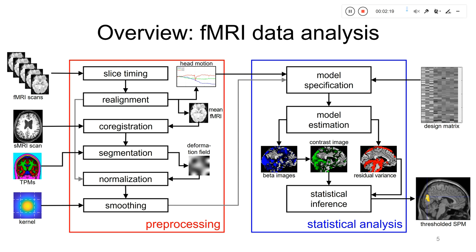This is an overview of fMRI data analysis as a whole. Everything in the red box on the left is called pre-processing — algorithmic corrections to remove spatial and temporal artifacts, which you heard about in the last session by Kai Gergen. Everything in the blue box on the right is called statistical analysis, or general linear model, where we specify our model, estimate parameters, and perform statistical inference to produce those thresholded maps showing which brain regions activate.